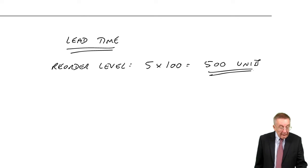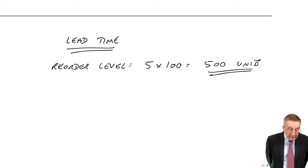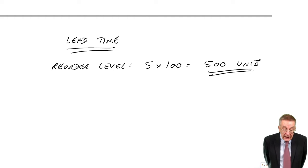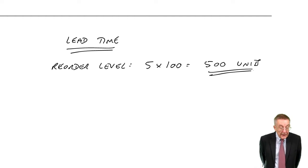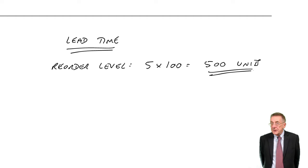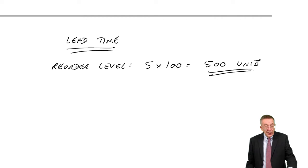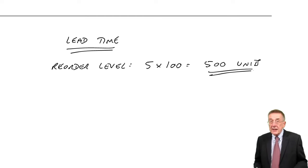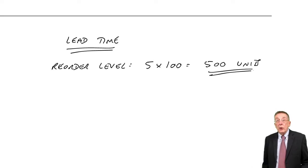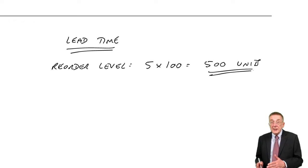Look at example six. A company has a demand from customers 100 units a week. The time between placing an order and receiving the goods, the lead time is five weeks. But we have a policy of holding safety inventory of 100 units. So although, essentially it's the same example as number five, we should be okay ordering when we've 500 units left.